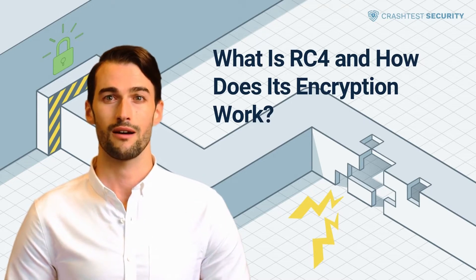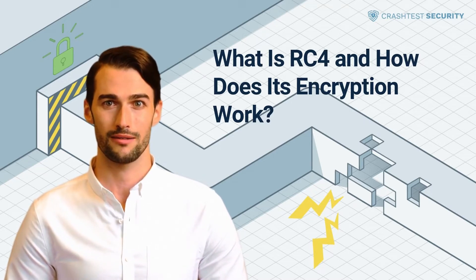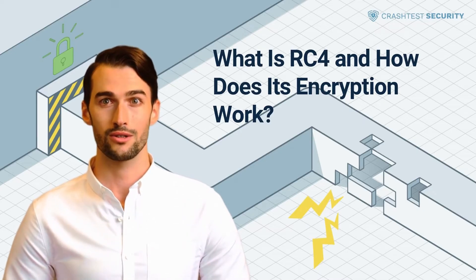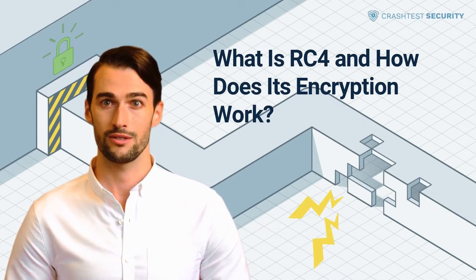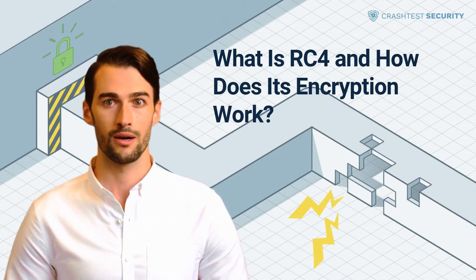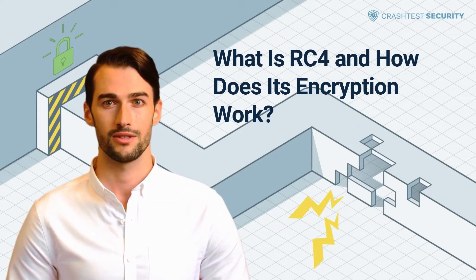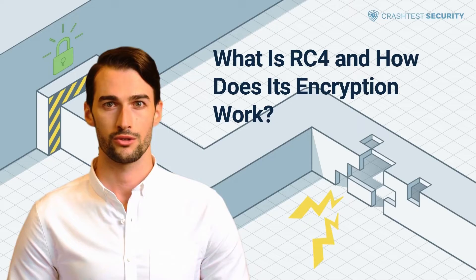Stream ciphers work byte by byte on a data stream. RC4, in particular, is a variable key size stream cipher using 64-bit and 128-bit sizes. The cipher uses a permutation and two 8-bit index pointers to generate the key stream.